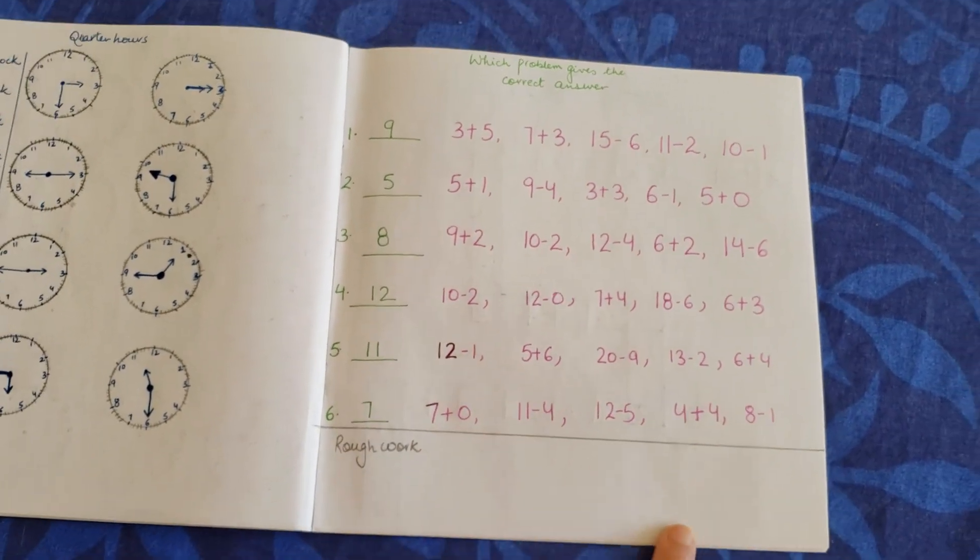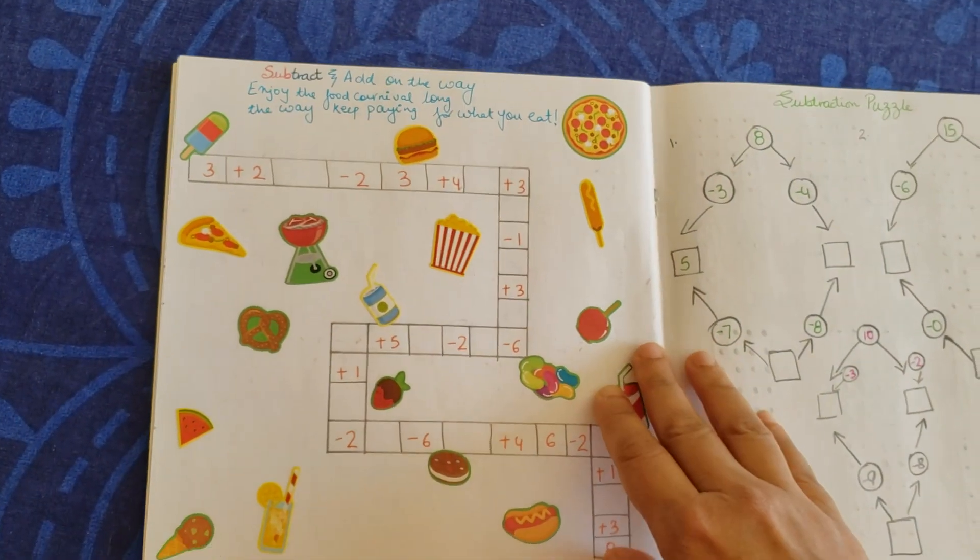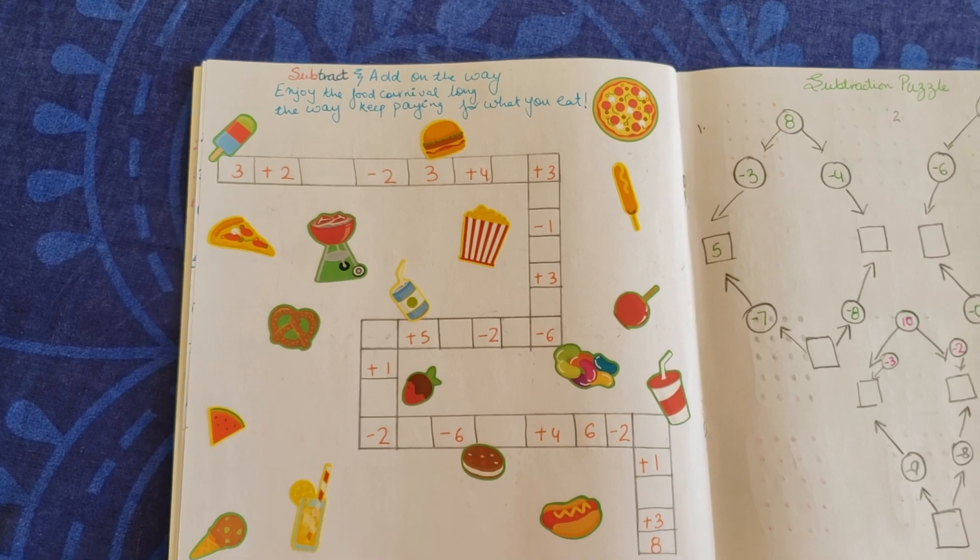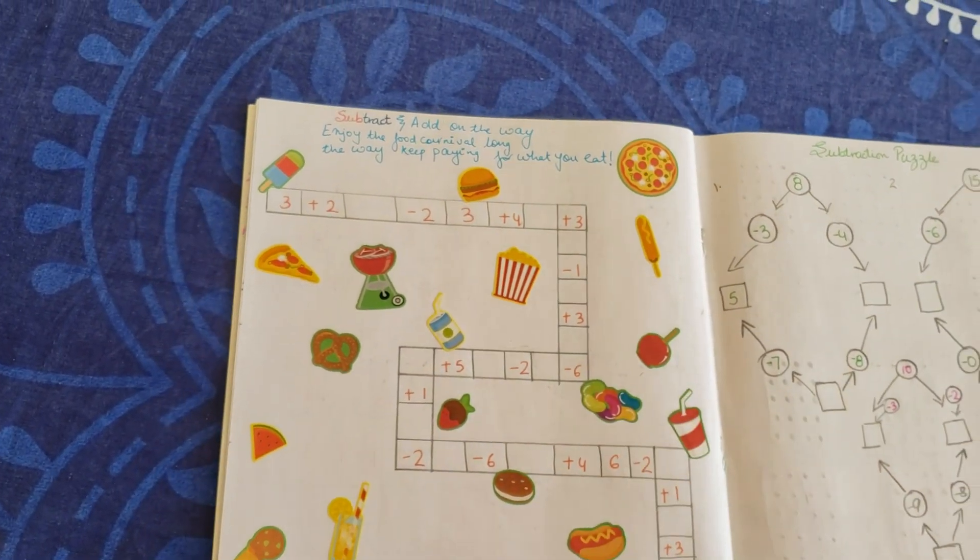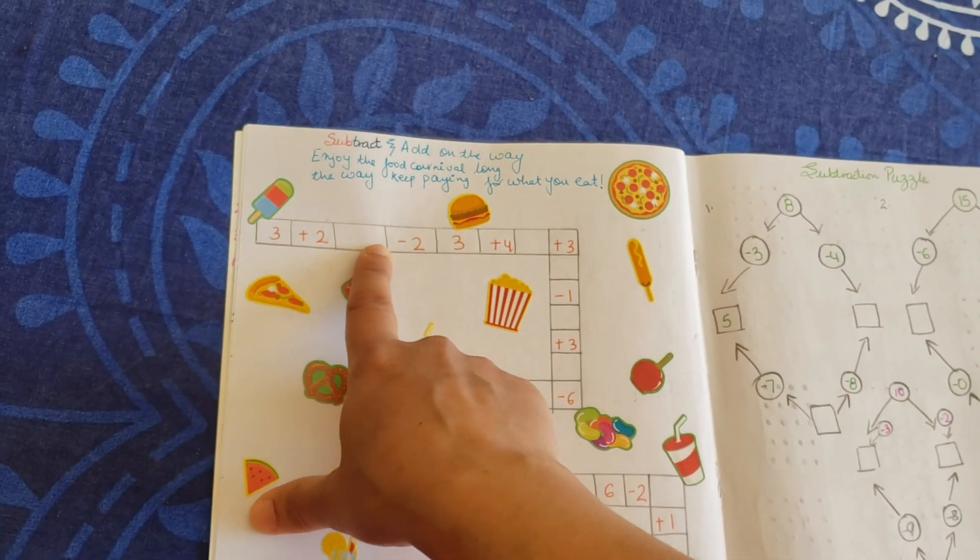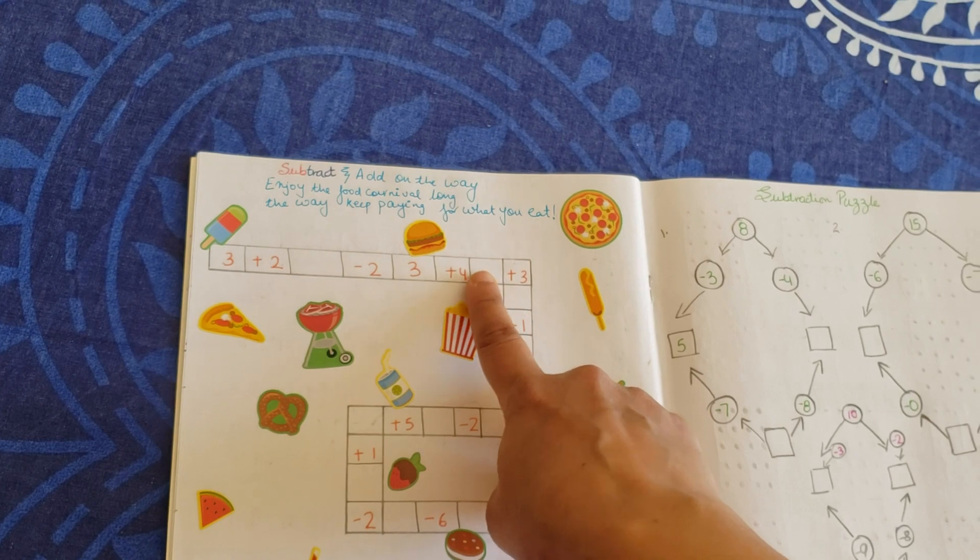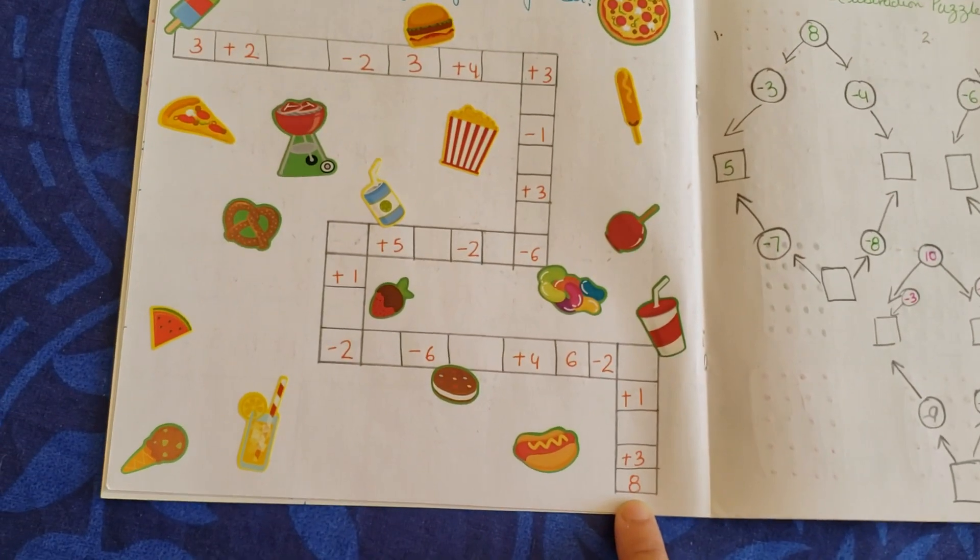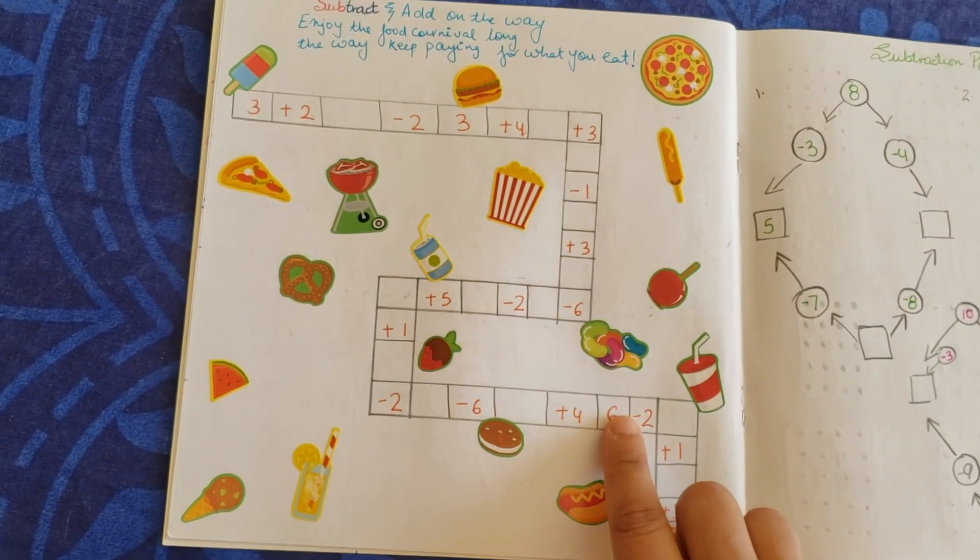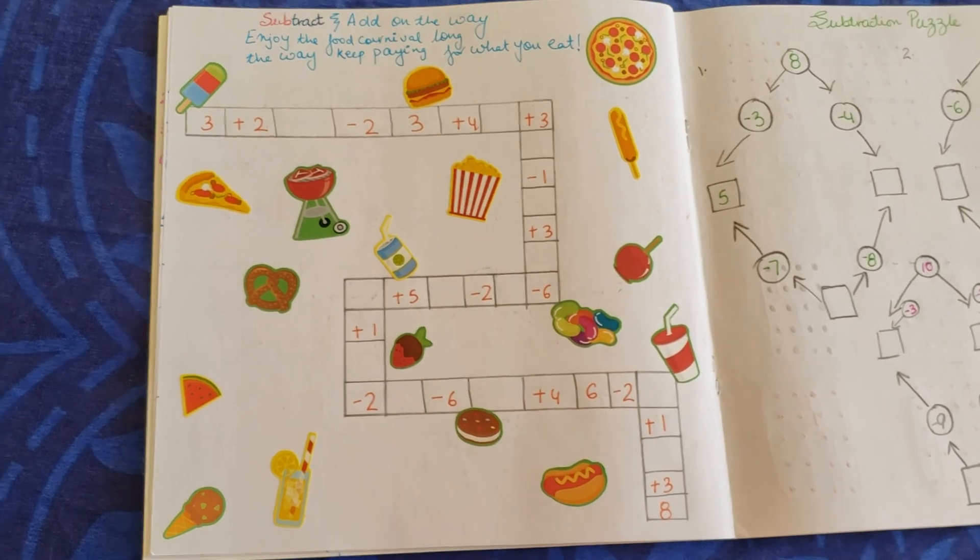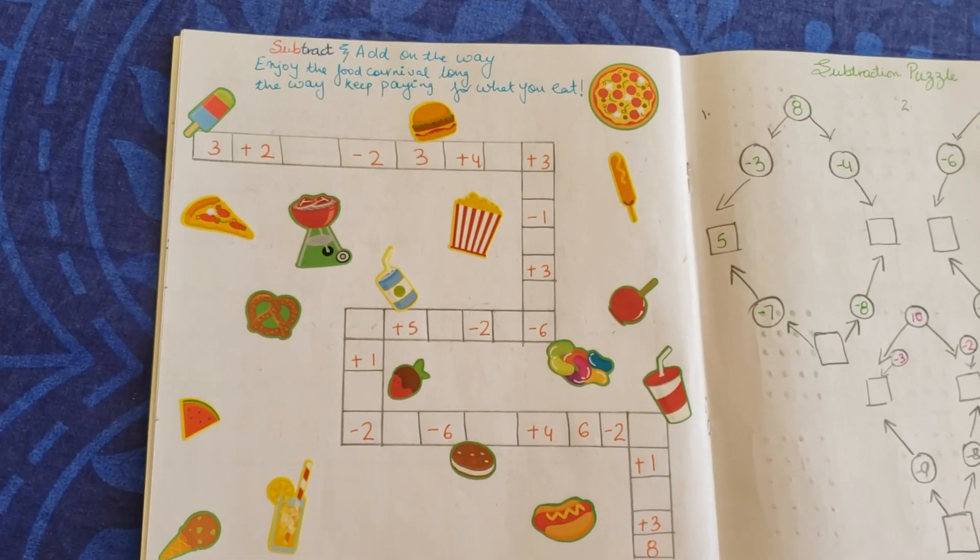For rough work I've given him some space right here so that if he wants to just do the math, he can use the space. This is like subtract, add on the way, enjoy the food carnival along the way paying for what you eat. I just went to a carnival with Vivan and I thought it's a great idea to put it right here. You have to go three plus two, then write that five minus two comes to three. This thing I've already done primarily for him. Then on the way he needs to keep adding, subtracting, and then he'll finally come to the answer which is eight. So if anywhere he goes up and down, the answer will not be right. Maybe we'll try and do this at one time and then this another time, or if he's okay doing it, maybe we can finish it in a day's time.